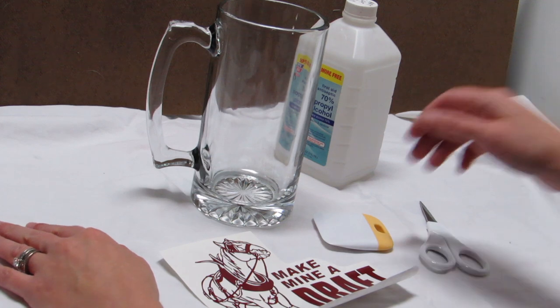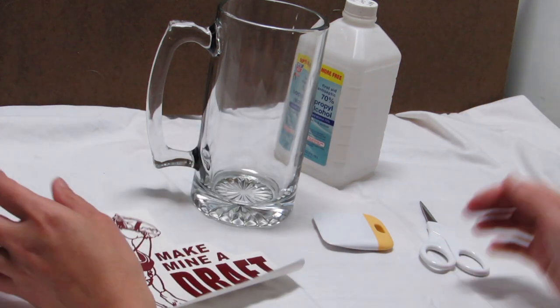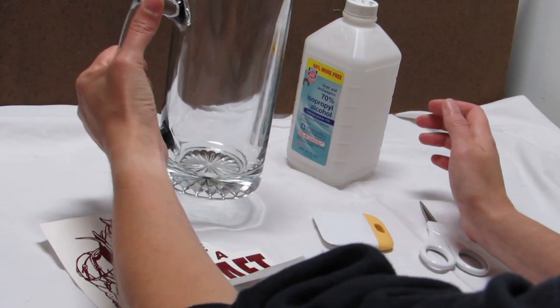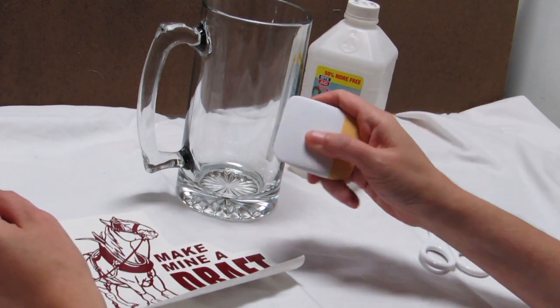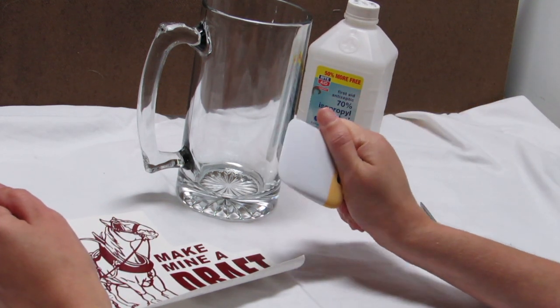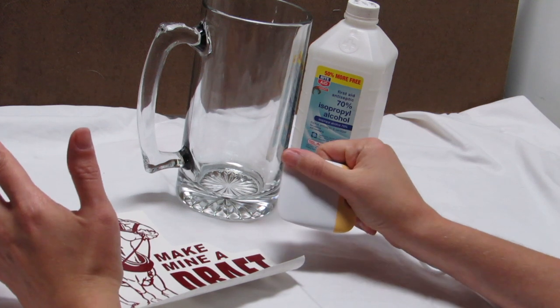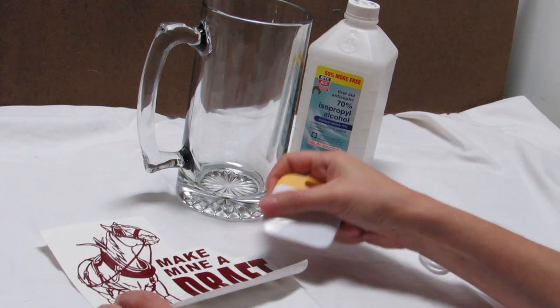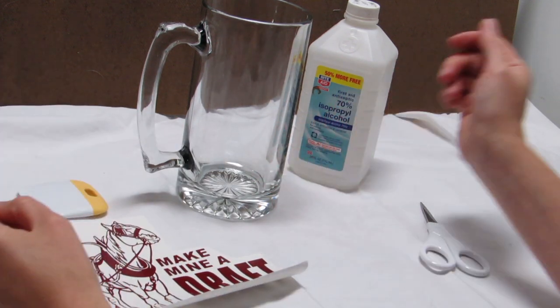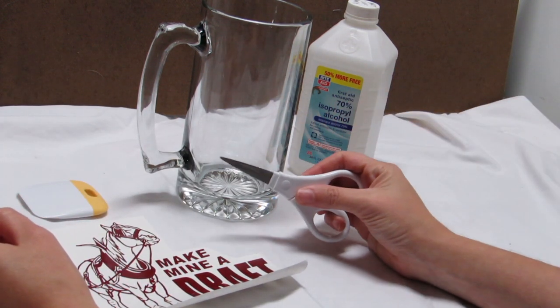To start, you will need your decal, your surface of choice, rubbing alcohol, a burnishing tool of some sort. A credit card works perfectly fine for this as well, anything that's hard and thin that you can rub down your decal and transfer tape with. And you may need a pair of scissors as well.